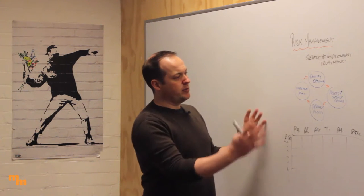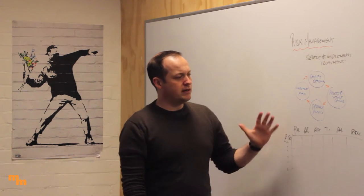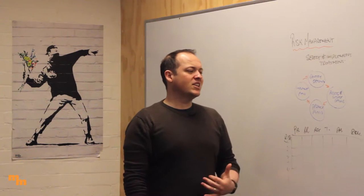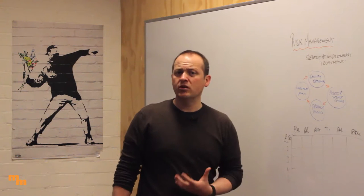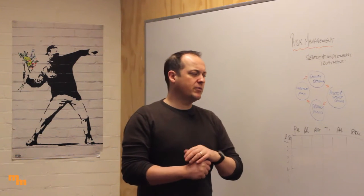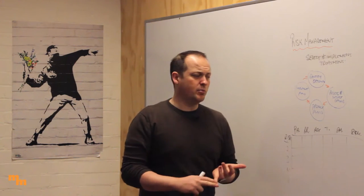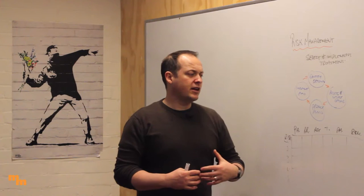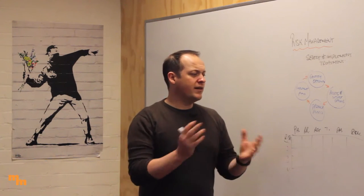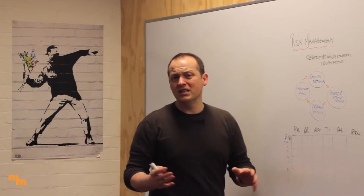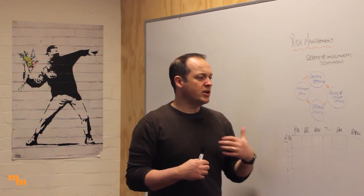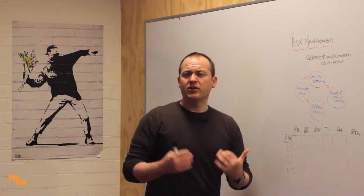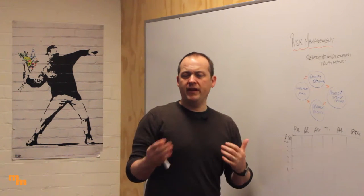Before you can implement it, you need to think about how you're going to communicate this plan. You've identified all your risks, you know what you're going to do about them, you know the consequence and likelihood — but how does everybody know that? You need to make sure everyone in your organization knows about it. The purpose of communicating is to ensure people who are responsible for implementing the plan know their responsibilities, what they're supposed to be doing, who they answer to, and who to report problems to.